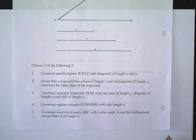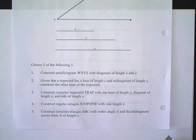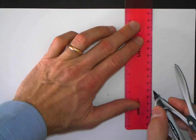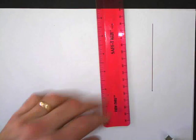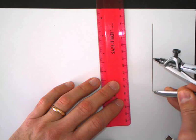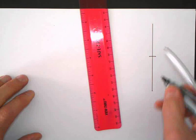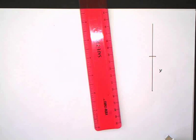All right, next up, number four: construct a regular octagon with side length x. So let's copy side length x to start with. I've got one side done — there's x.